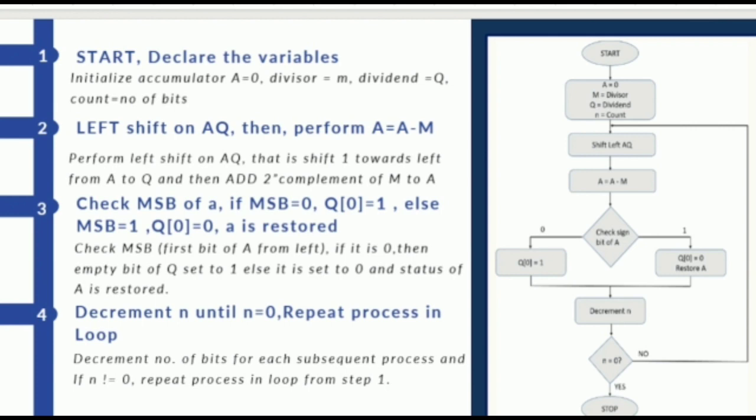And in the next step, N equals N minus 1, where N is decremented by 1. And if value of N is equal to 0, then and only then the next step will continue. Otherwise, the process gets repeated from the shift left AQ. Once N becomes 0, quotient will be shown in Q and the remainder will be in A. This is how we will see our result, and then algorithm will stop.